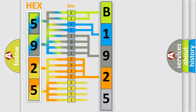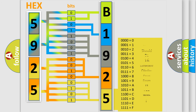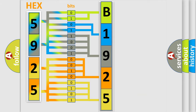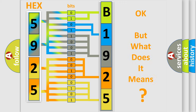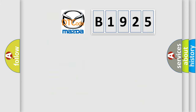A single byte conceals 256 possible combinations. We now know in what way the diagnostic tool translates the received information into a more comprehensible format. The number itself does not make sense to us if we cannot assign information about what it actually expresses. So, what does the Diagnostic Trouble Code B1925 interpret specifically for Mazda car manufacturers?